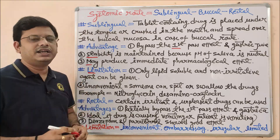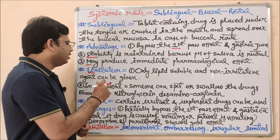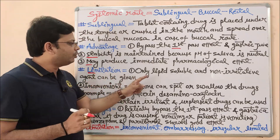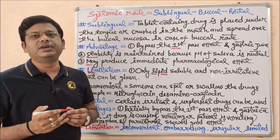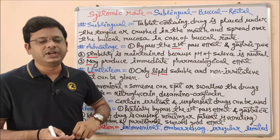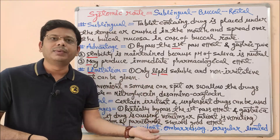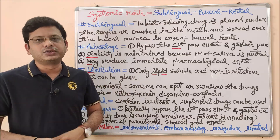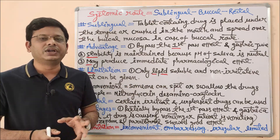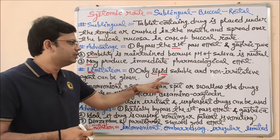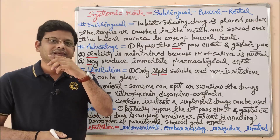Now, coming to their limitations — every drug has its pros and cons. In case of sublingual and buccal, there are a few limitations. First, only lipid soluble and non-irritating drugs can be given. Only those drugs which are lipid soluble can be given by this route. There are two types of drugs according to their solubility: water soluble and lipid soluble. Only those drugs which are easily soluble in lipid can be absorbed by the capillaries.